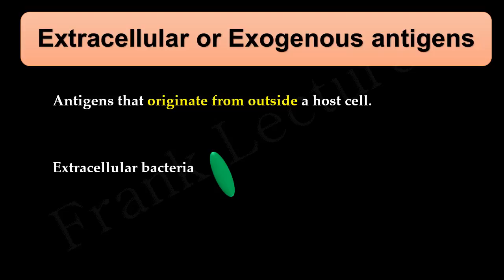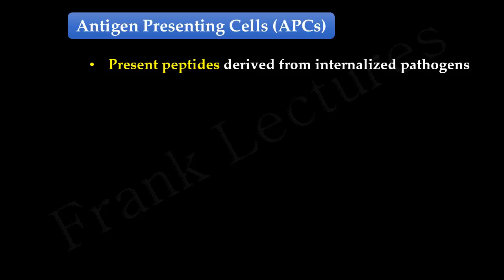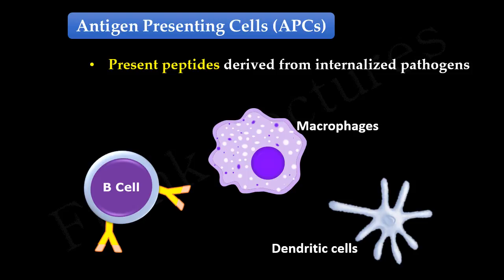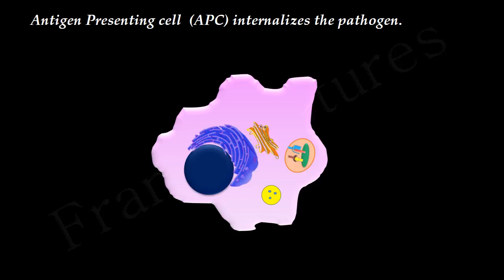The cells involved in this pathway are antigen-presenting cells. Recall that antigen-presenting cells are phagocytic cells which present peptides derived from internalized pathogens. These include B cells, macrophages, and dendritic cells. The pathway starts when the extracellular antigens such as extracellular bacteria are internalized by the antigen-presenting cells.